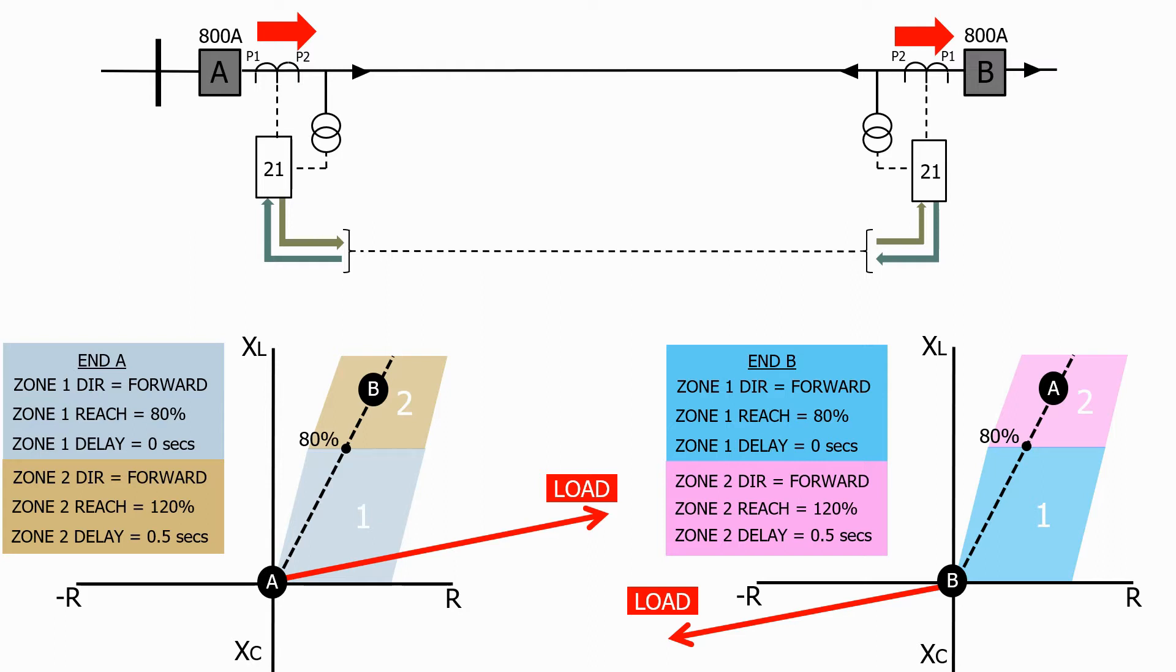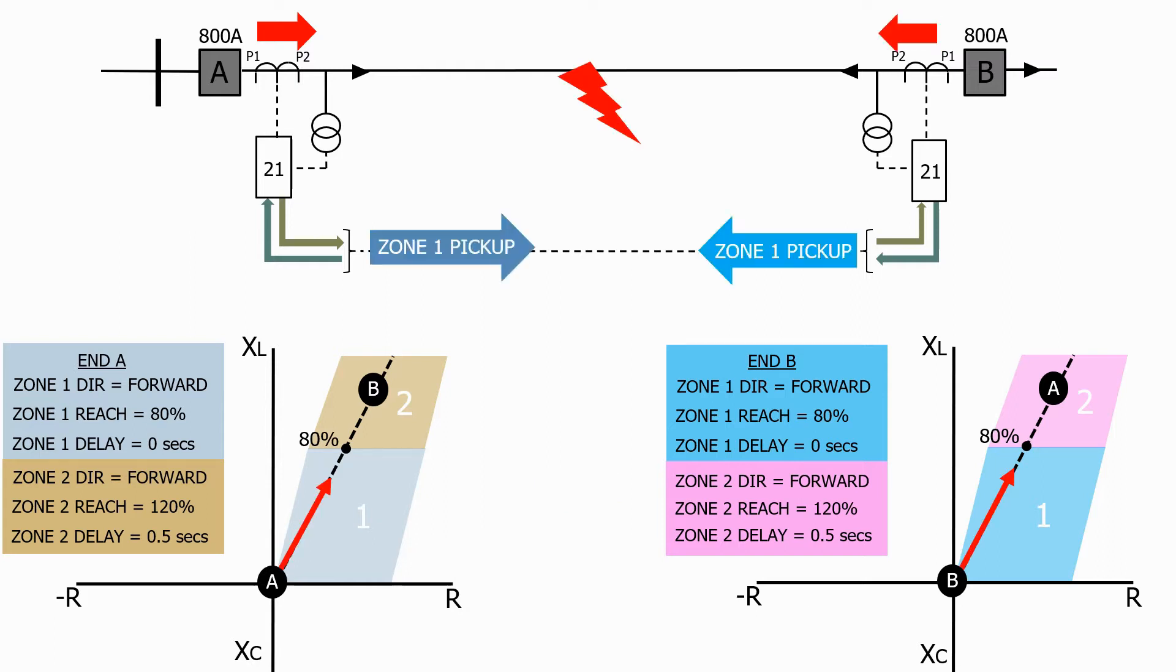Let's now add a fault halfway down the line. Straight away both of the impedance relays will see the fault in zone 1 and send the zone 1 pickup signal down the communication circuit to the relay at the far end.